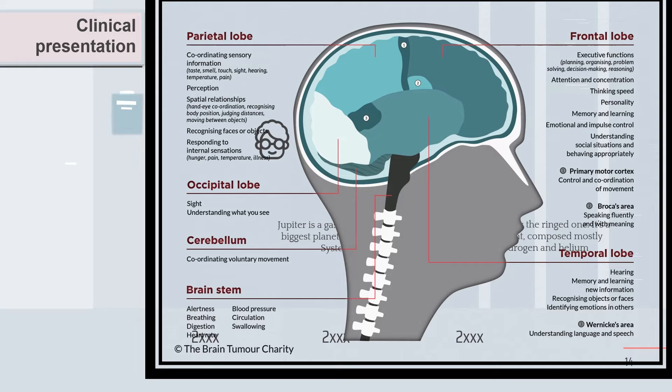The parietal lobe responds to internal sensation; it is mainly responsible for sensation. The occipital lobe is responsible for sight and understanding what you see. The temporal lobe is responsible for hearing, memory and learning new information, recognizing objects or faces, and identifying emotion.